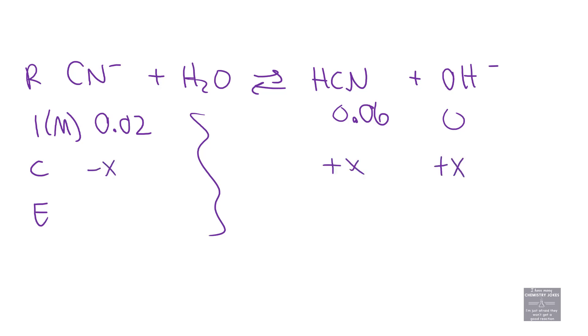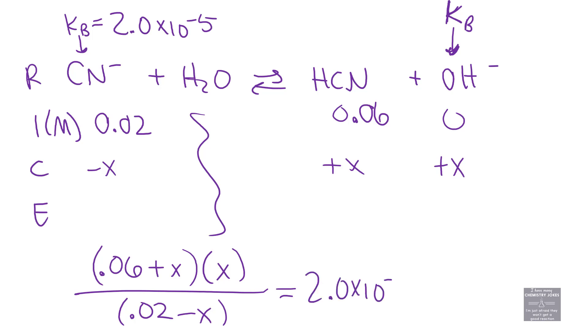We've got 0.02 molar CN-, 0.06 molar HCN, and no hydroxide. Minus X, plus X, plus X. This is equal to KB because hydroxide is one of our products. KB of cyanide equals 2.0 times 10^-5. The cool news: 2.0 times 10^-5 is small, meaning X is small. We get to ignore this X and that X. Our equation is quite easy to solve for X, and we get X equals 6.67 times 10^-6.